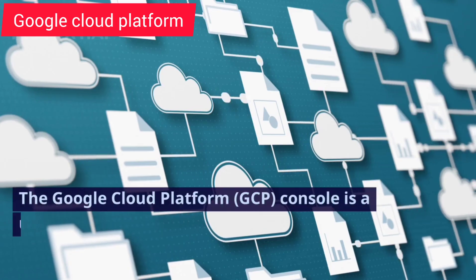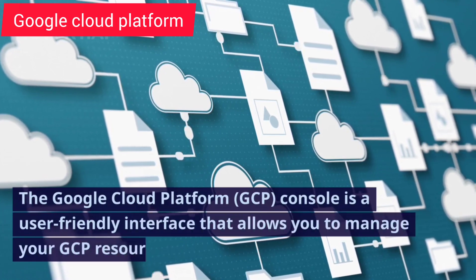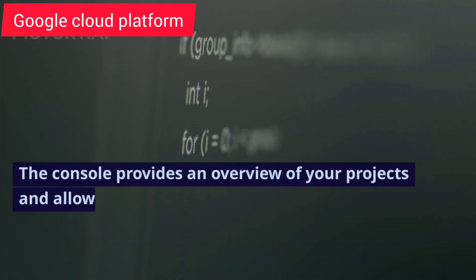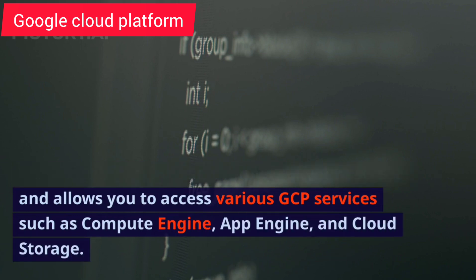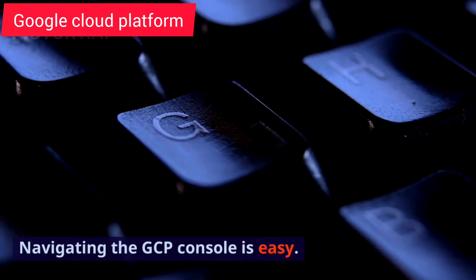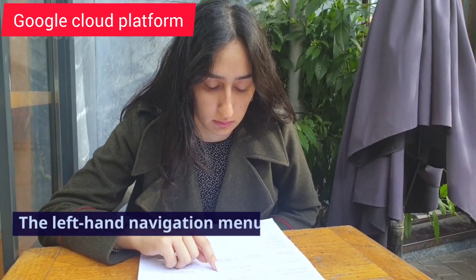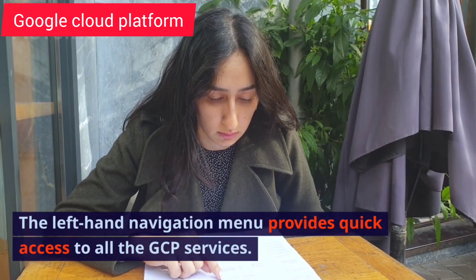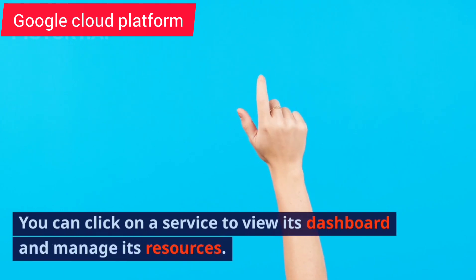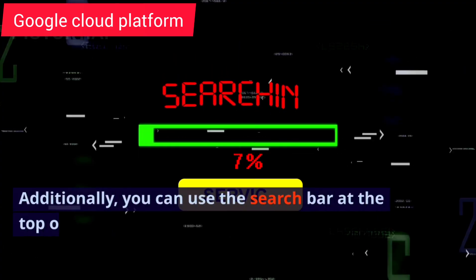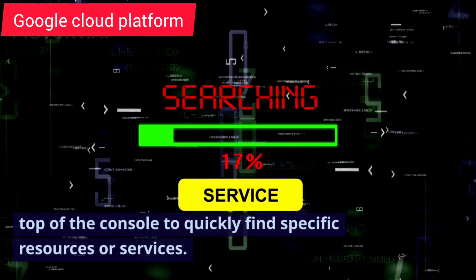Navigating the GCP Console. The Google Cloud Platform console is a user-friendly interface that allows you to manage your GCP resources. The console provides an overview of your projects and allows you to access various GCP services such as Compute Engine, App Engine, and Cloud Storage. The left-hand navigation menu provides quick access to all the GCP services. You can click on a service to view its dashboard and manage its resources. Additionally, you can use the search bar at the top of the console to quickly find specific resources or services.